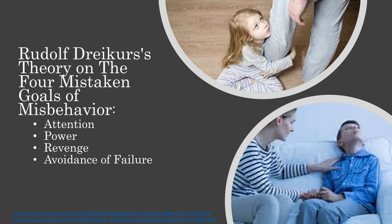Dreikurs' Four Mistaken Goals of Misbehavior are: 1. Attention, 2. Power, 3. Revenge, and 4. Avoidance of Failure.